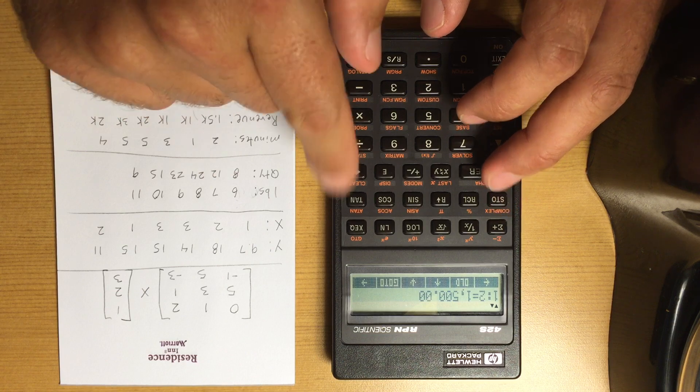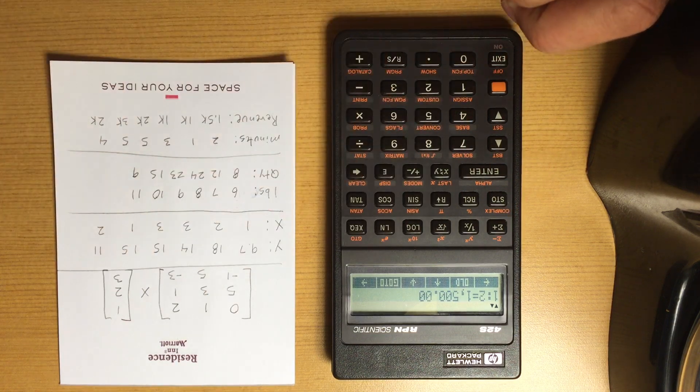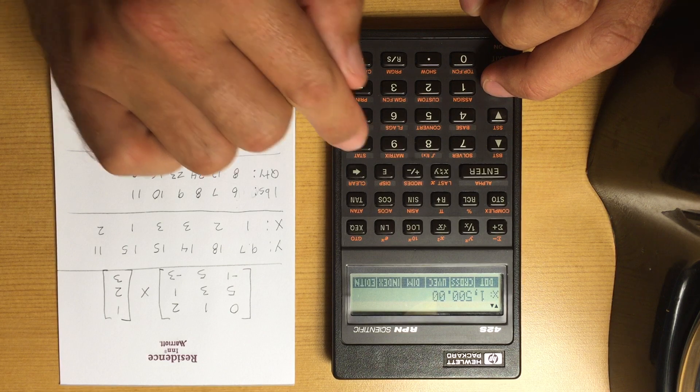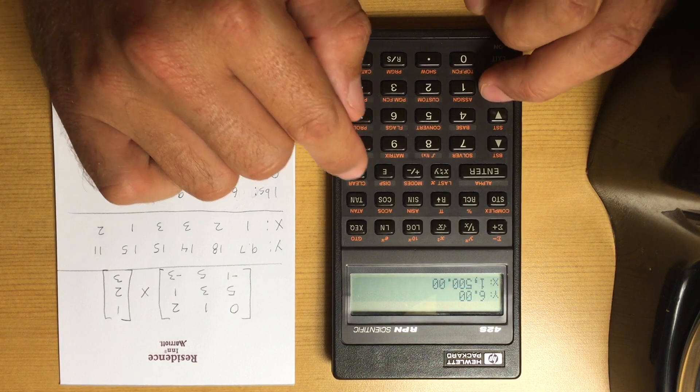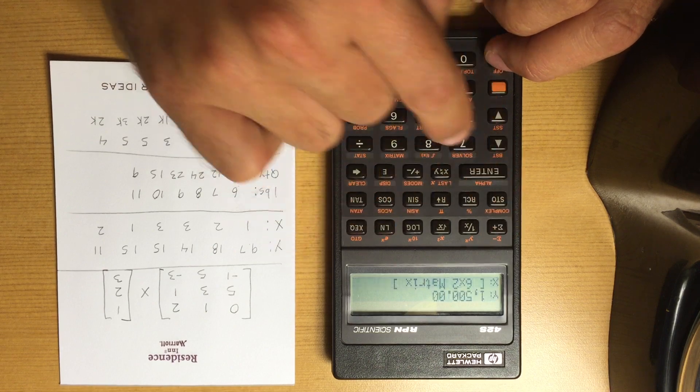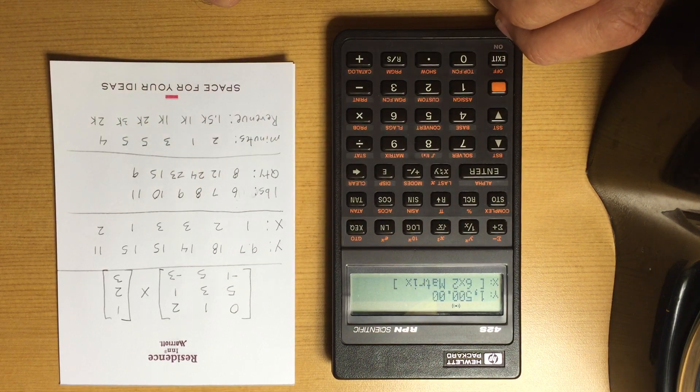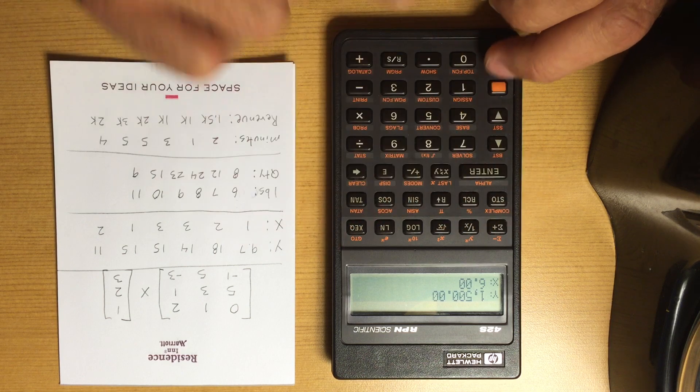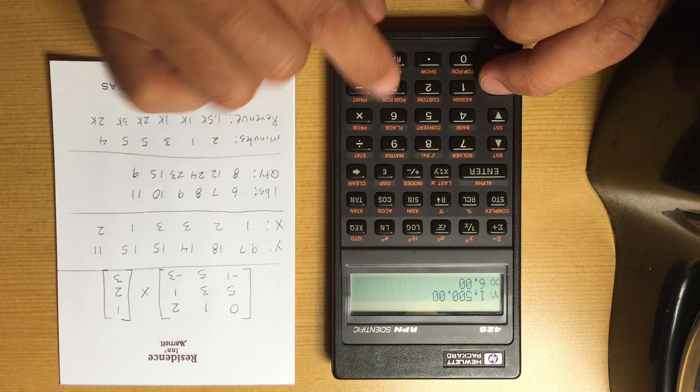So I've got all my data entered—my X's. I just went across each element, entered it, and kept going through the matrices. Okay, clear out my statistics. Recall matrix 1, my 6 by 2 matrix. Do my statistics register operation on it.